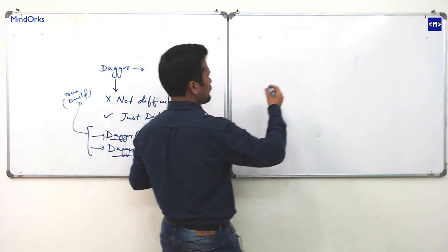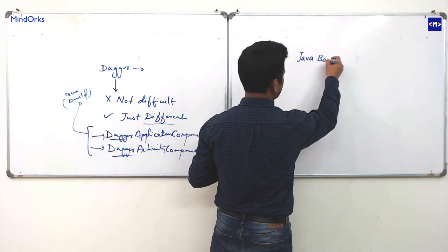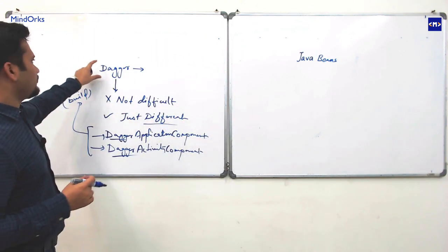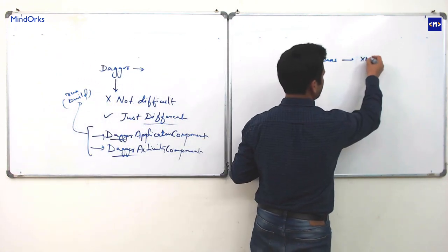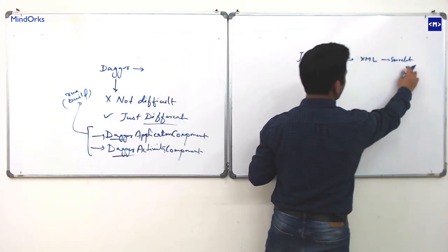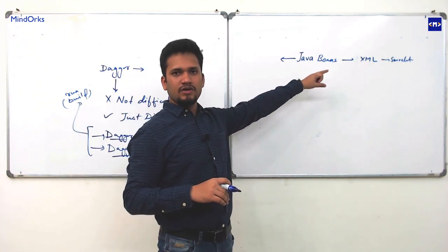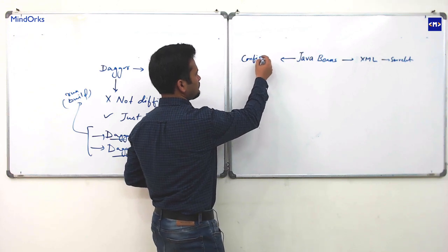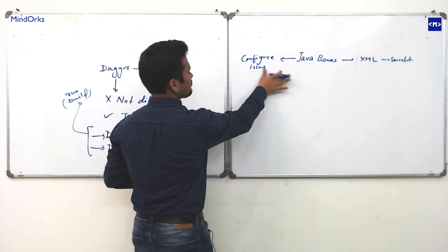Let's look at the history of dependency injection, starting with Java Beans. Java Beans used to create the dependency component through XML, and was used in servlets for web apps. Since configuration was in XML, it had to be written manually in a file, and any configuration change required modifying that file — making it very difficult to configure.